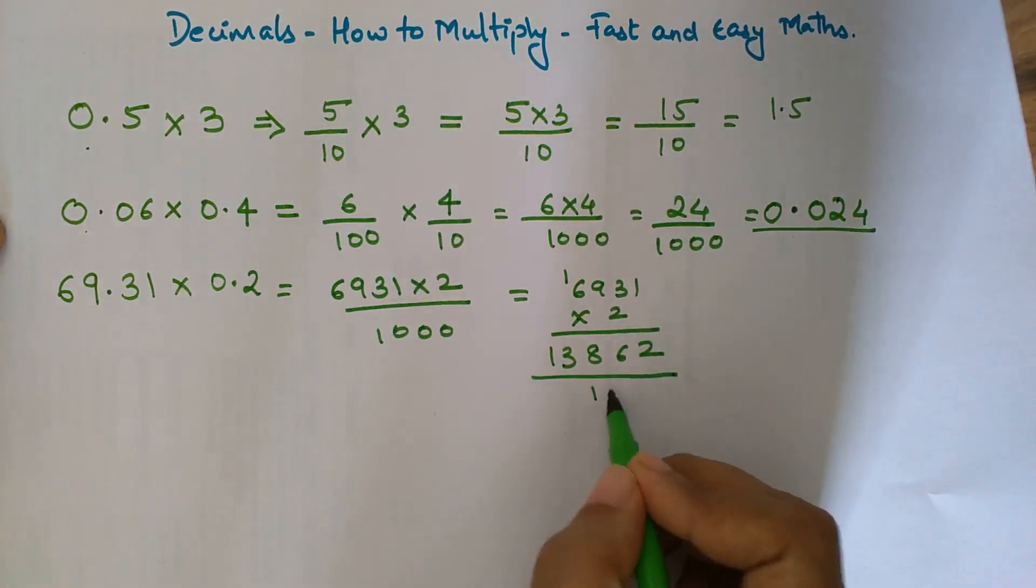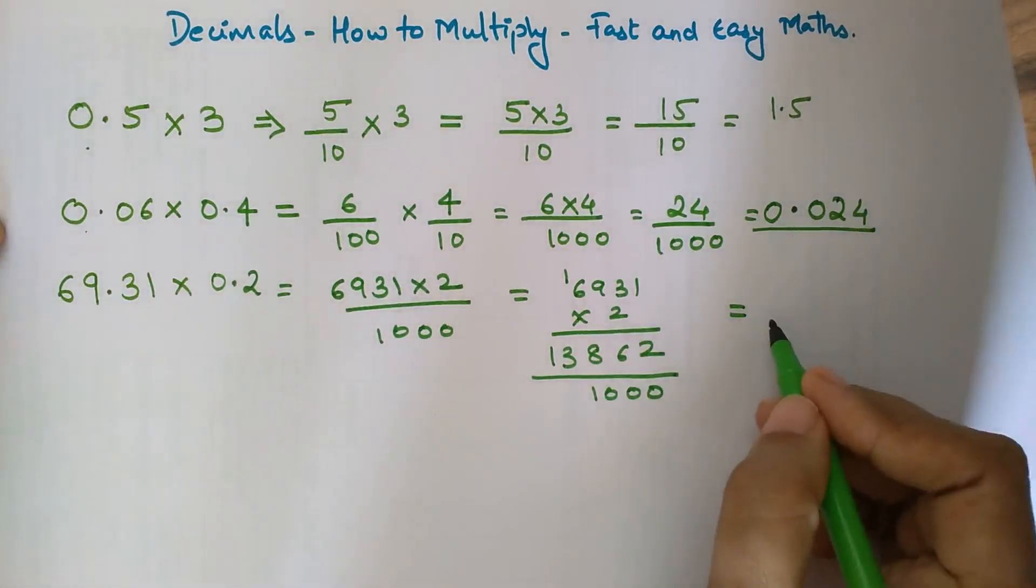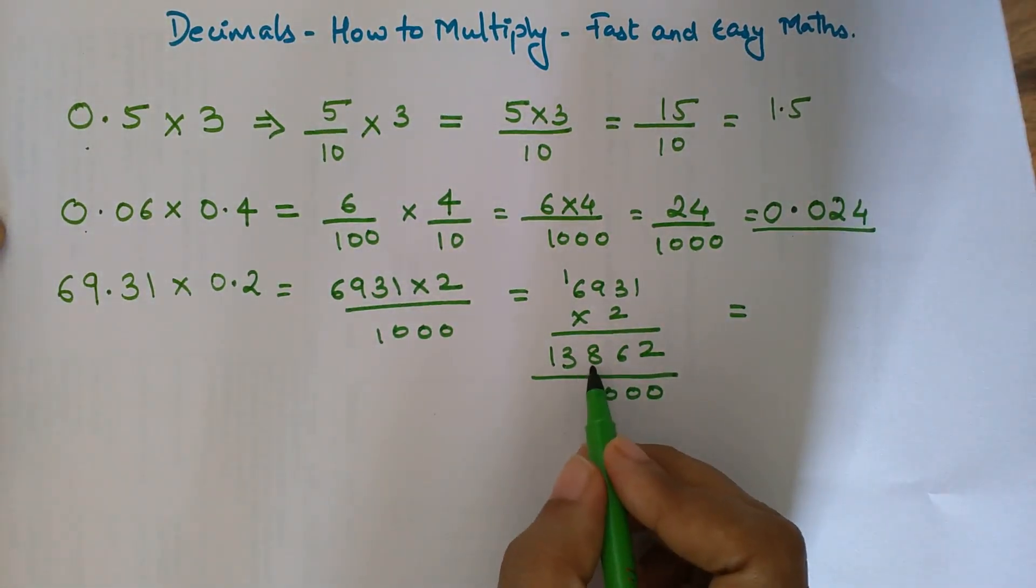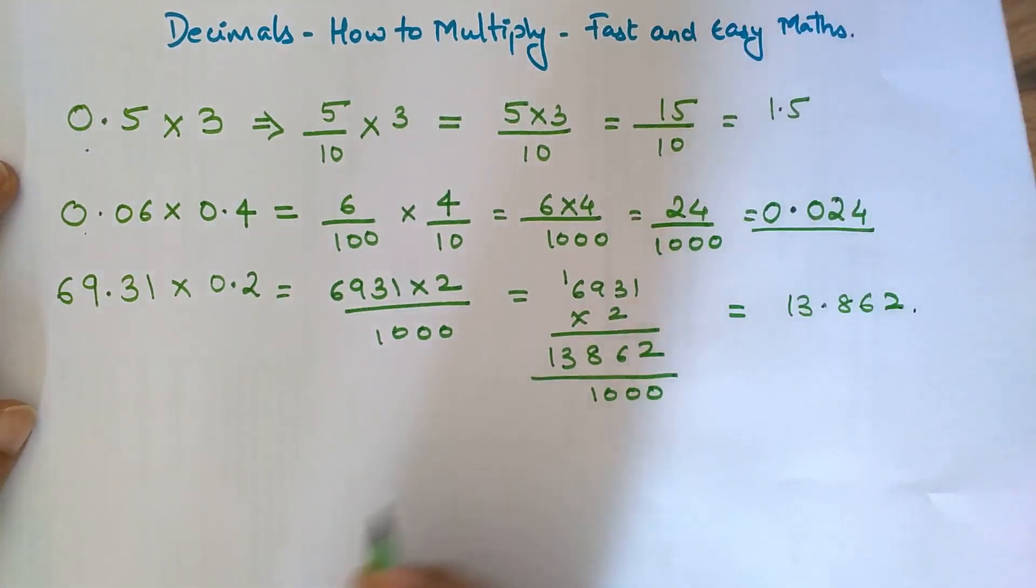This answer has to be divided by 1000. So my final answer will have a decimal point 3 digits from the right. The answer is 13.862.